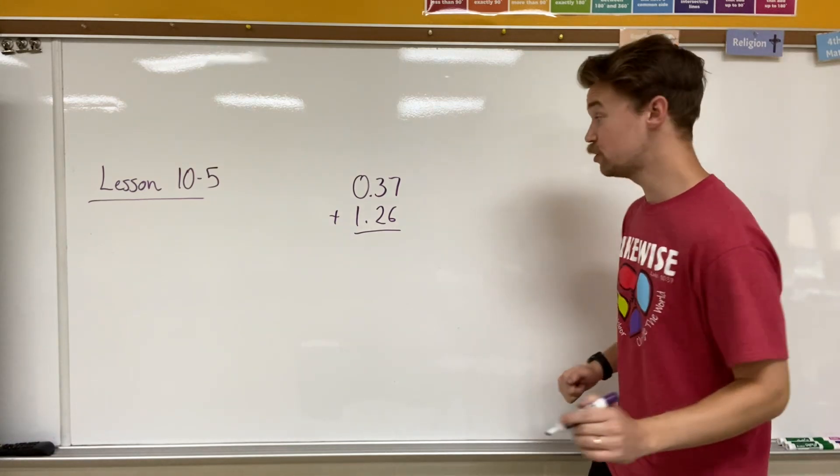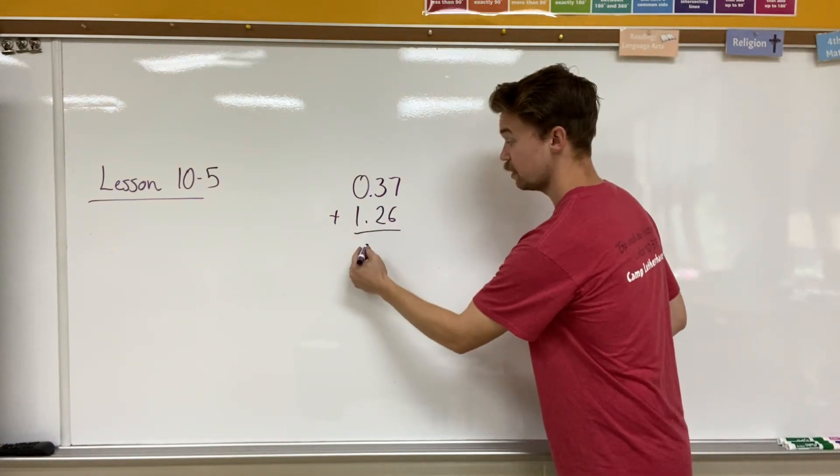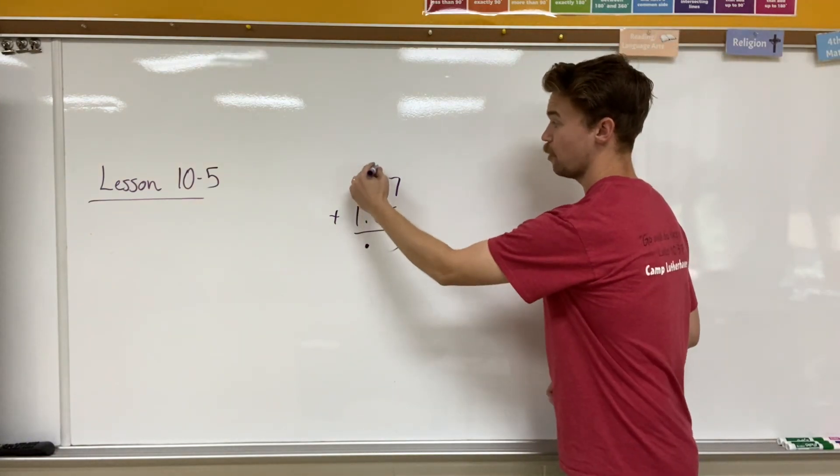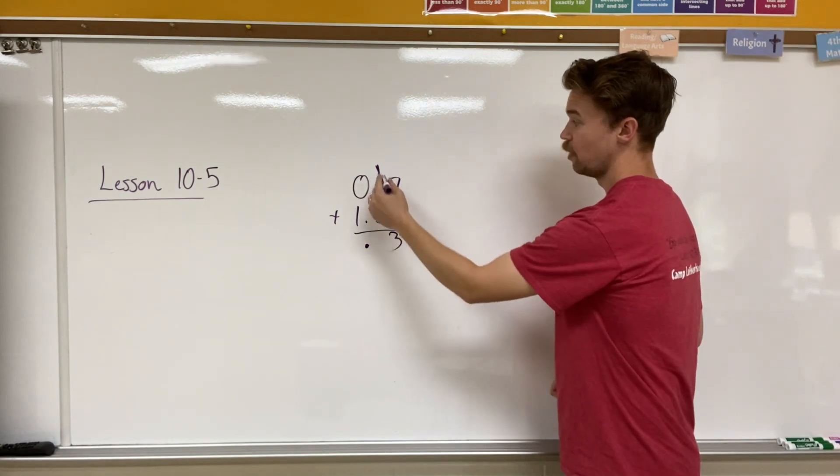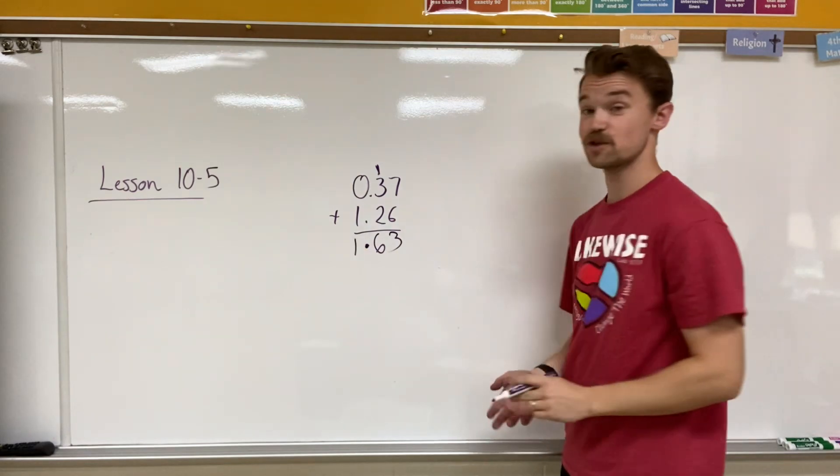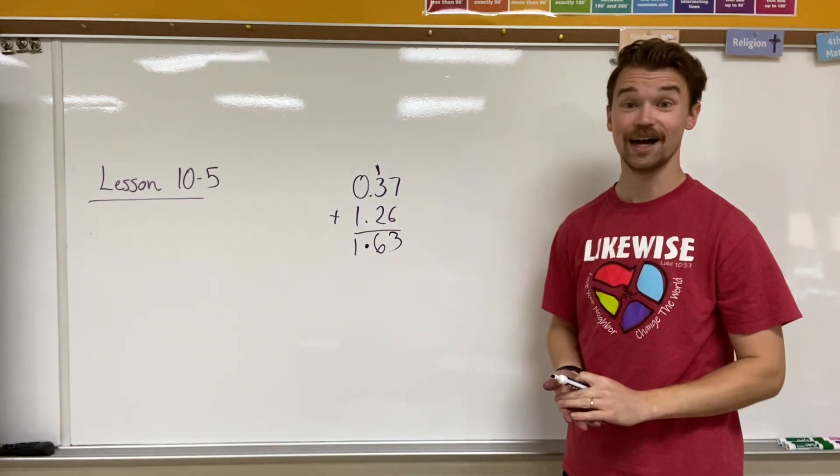Well, I can add like I normally do, but make sure that I have my decimal place down here in my answer spot. So seven plus six is 13. I'm going to be carrying my one to the next place value over. One plus two is three, and three plus three is six, and zero plus one is one. So my answer is 1.63.